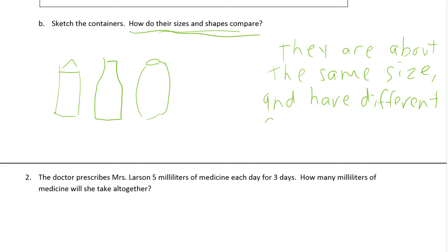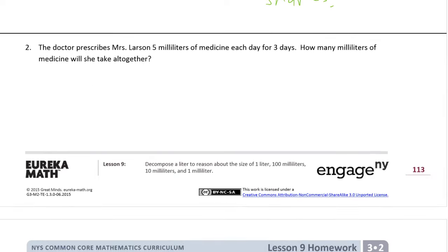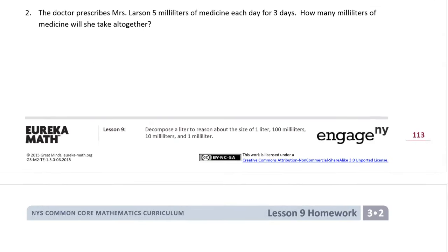They are different shapes. Maybe the ones you found all had the same shape — then write that they all have the same shape. The containers you find are going to be different than the ones I find because you don't live in my house.